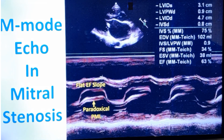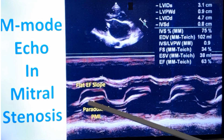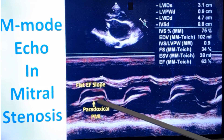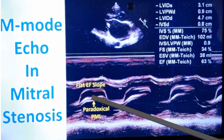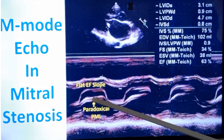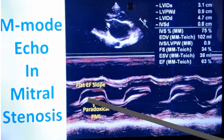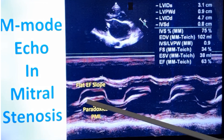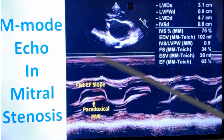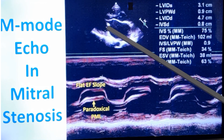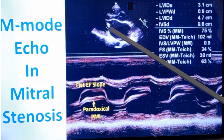The second important feature is the paradoxical movement of the posterior leaflet. The density is increased, indicating fibrosis and calcification, which is very well seen in the 2D image as well.